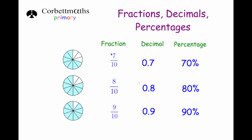The tenths are quite nice because the number on top of the fraction just becomes the percentage — you times it by ten. So seven over ten is 70%, eight over ten is 80%, nine over ten is 90%. And as a decimal number, it's just 0. followed by whatever whole number is above the ten.